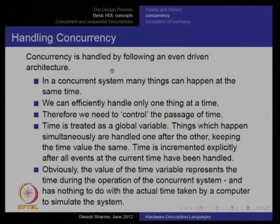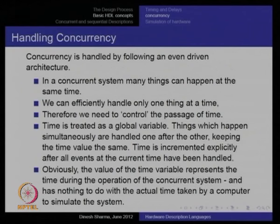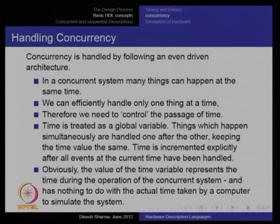Concurrency is handled by following an event-driven architecture. In a concurrent system, many things can happen at the same time, but we can efficiently handle only one thing at a time. Therefore, we need to control the passage of time, which is treated as a global variable. Even though during simulation time is passing, as long as the value of this global variable remains constant, in simulation time it appears as if everything is happening at the same time. The time is incremented explicitly after all events at the current time have been handled.